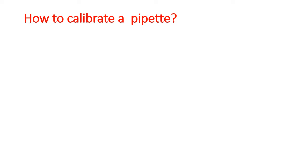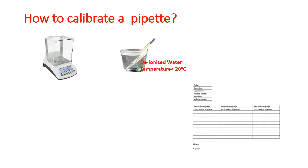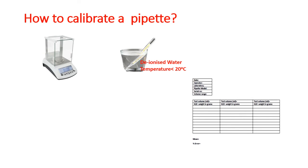Now, this calibration should be done from an external agency preferably or can be done in house also. Now, let us look at the steps of calibration. What are the prerequisites? We need a calibrated or standardized electronic weighing balance. We need deionized water at a temperature preferably less than 20 degree centigrade. And we need a calibration chart displaying the date, the operator who is doing the calibration, the name of the laboratory, the pipette model, serial number, volumetric range, etc.